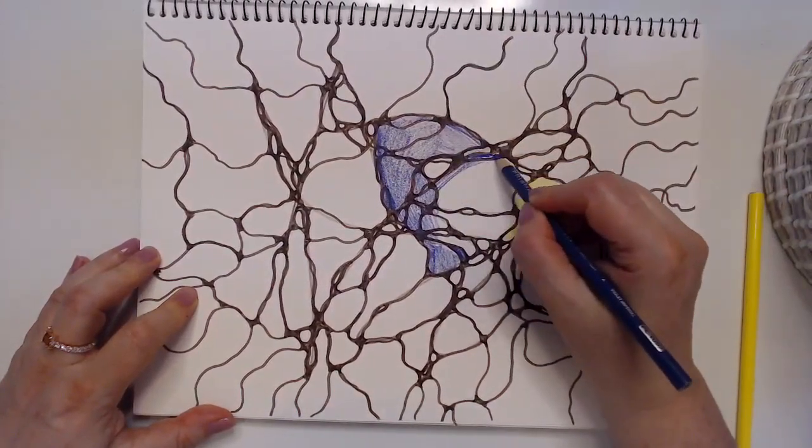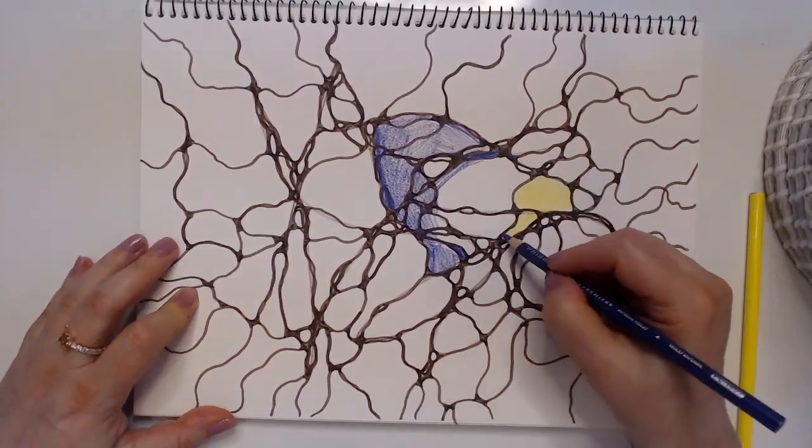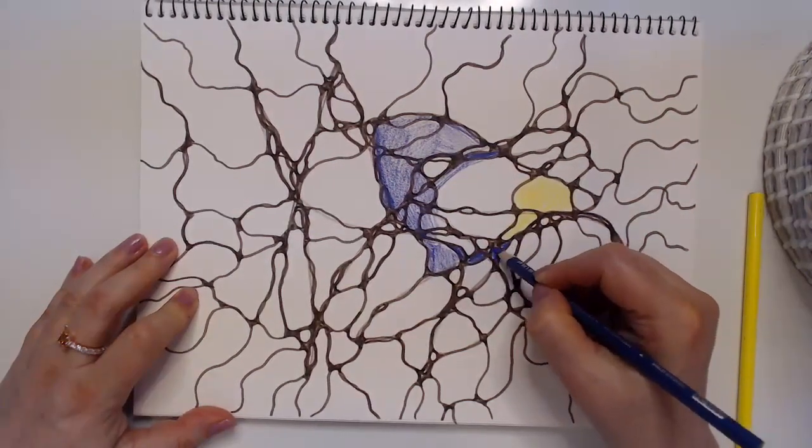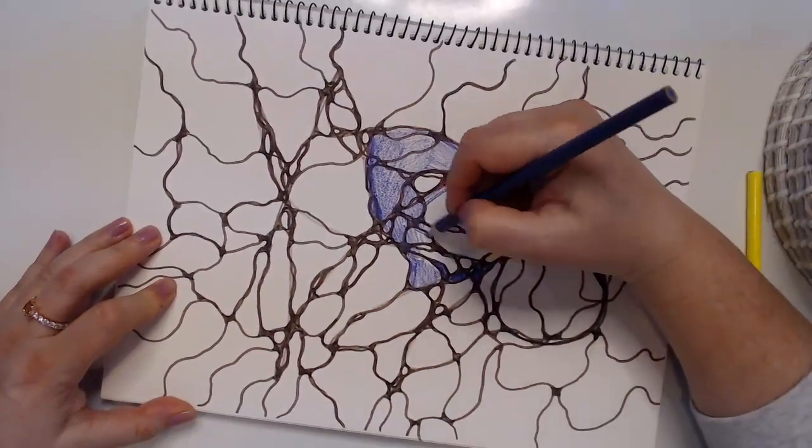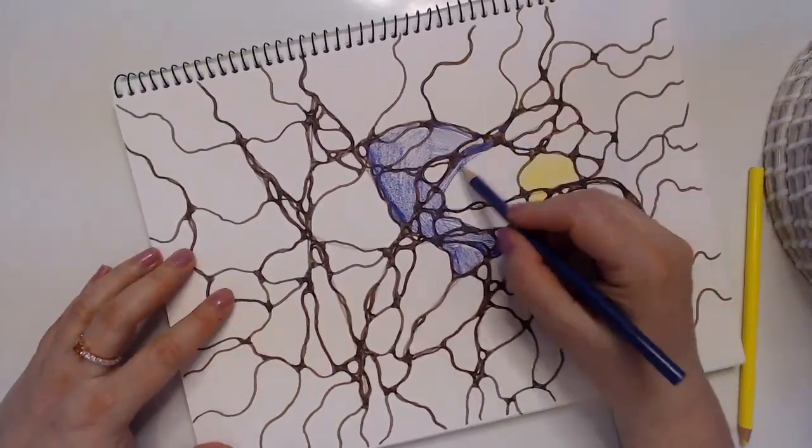You just start coloring. You start coloring. You can really push your pencil hard in one place to create kind of like a 3D effect. You could do that.